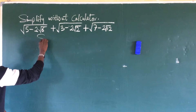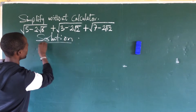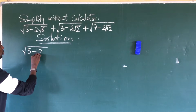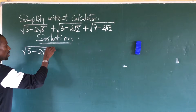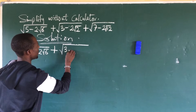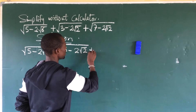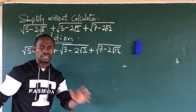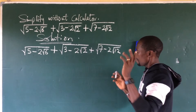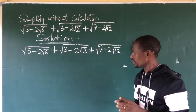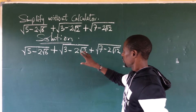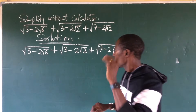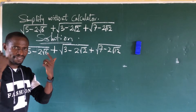Let's go to the board and take our solution without much waste of time. We put down the question: the square root of (5 minus 2√6), plus the square root of (3 minus 2√2), plus the square root of (7 minus 2√12). Now, if you look at this, you'll discover that we are having '2 root something' in each term.